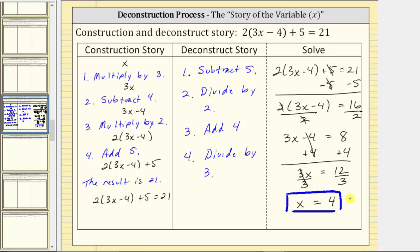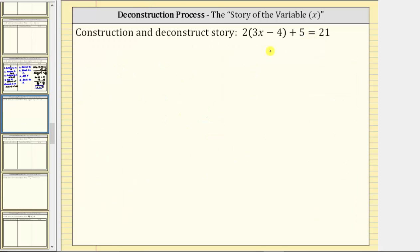To verify this, let's substitute four for x in the original equation and make sure it satisfies the equation. We found the solution is x equals four, so substituting four for x gives us two times the quantity three times four minus four plus five equals twenty-one.